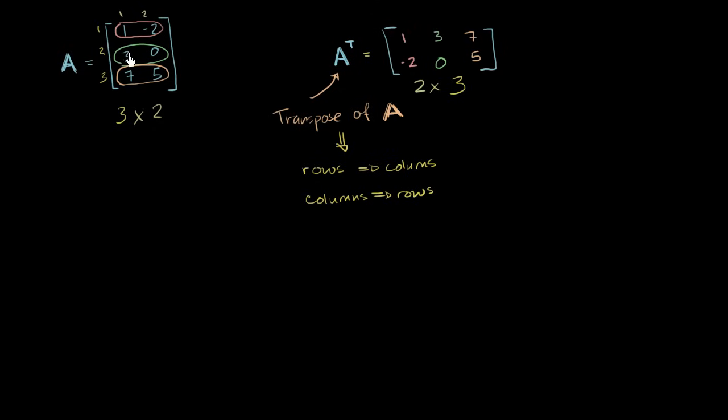And you could have just as easily viewed it the other way around. You could say, look, I have two columns. My first column is 1, 3, 7. So my first row now is going to be 1, 3, 7. And then you could say, my second column is negative 2, 0, 5. And so my second row will be negative 2, 0, 5.